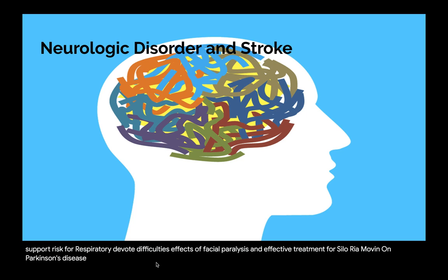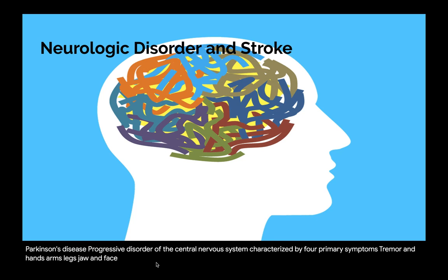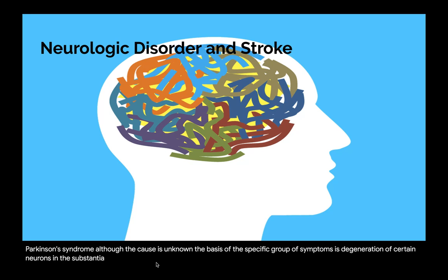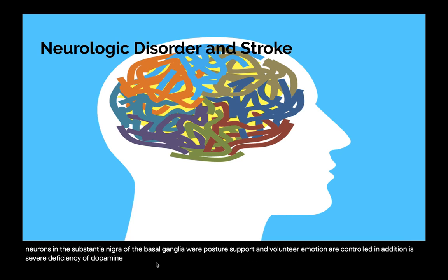Parkinson's disease is a progressive disorder of the central nervous system characterized by four primary symptoms: tremor in hands, arms, legs, jaw, and face; rigidity of limbs and trunk; bradykinesia or slowness of movement; and postural instability. Although the cause is unknown, the basis of the symptoms is degeneration of certain neurons in the substantia nigra of the basal ganglia, where posture support and voluntary motion are controlled. In addition, a severe deficiency of dopamine — one of the substances that participates in nerve transmission — occurs.